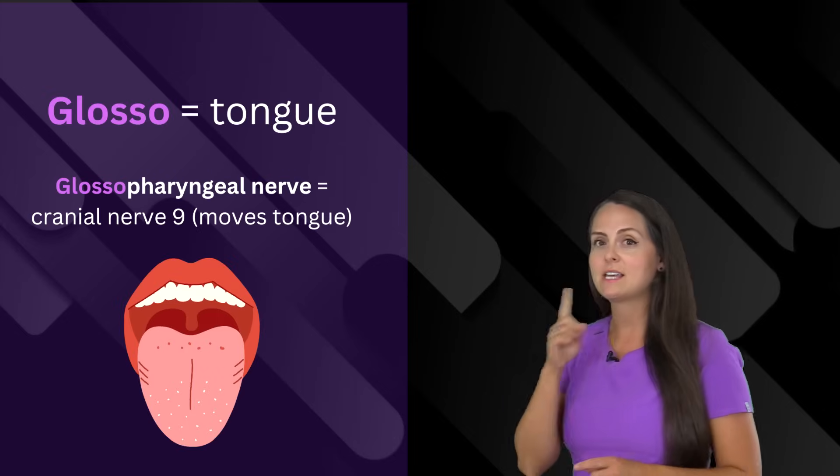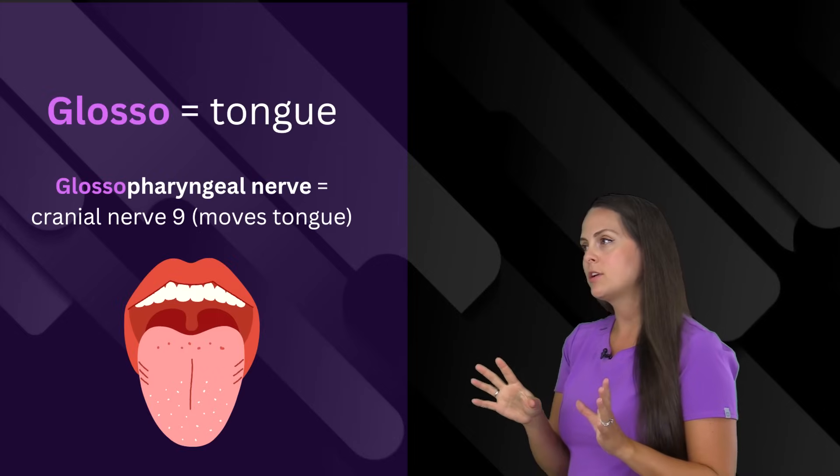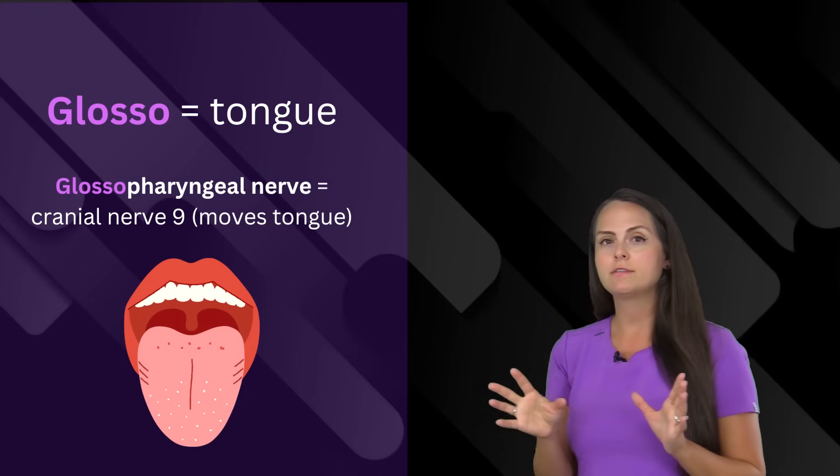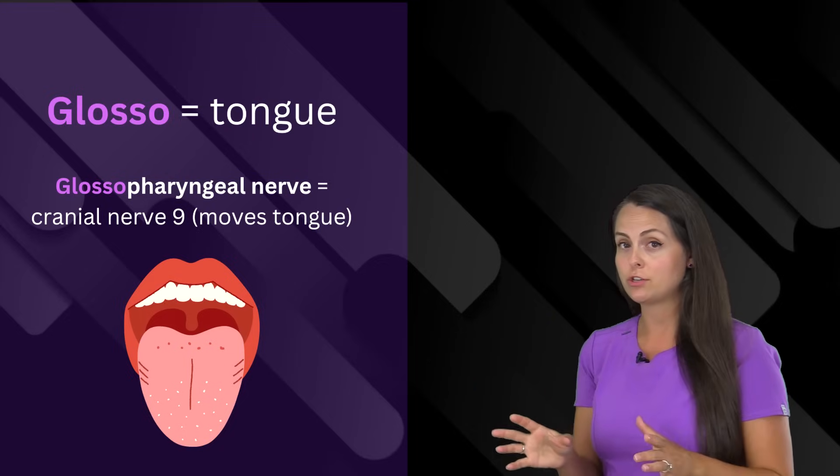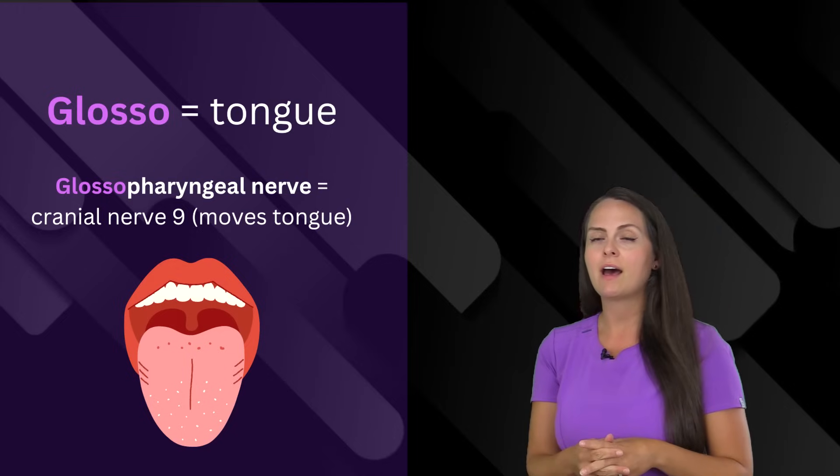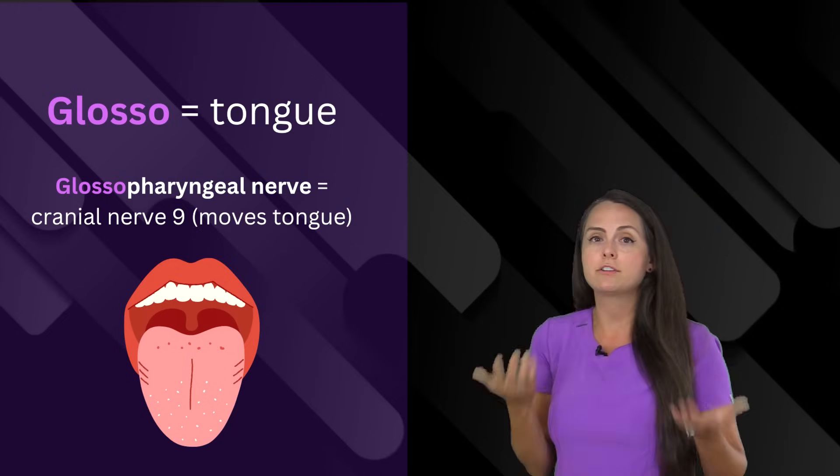Glosso means tongue. And you'll see this prefix whenever we're talking maybe about certain cranial nerves like the glossopharyngeal nerve. This is cranial nerve nine that we can test. And this controls the movement of our tongue.